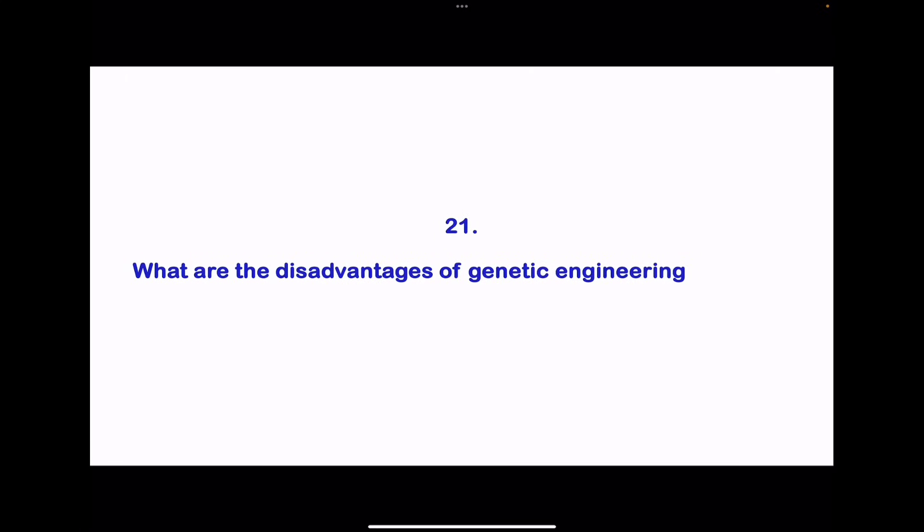Question 21. What are the disadvantages of genetic engineering? Here we have some ethical concerns where genetic manipulation, especially in humans and animals, raises ethical issues regarding the extent to which humans should interfere with natural organisms. There is a risk of unintended consequences, where it may lead to unforeseen side effects, including the creation of new allergens or toxins in genetically modified organisms.